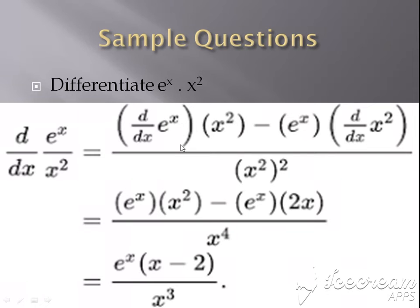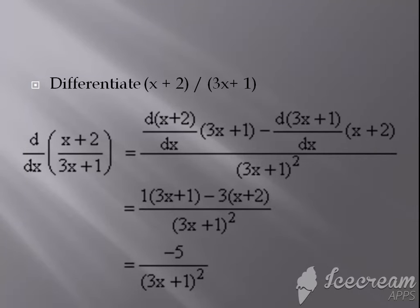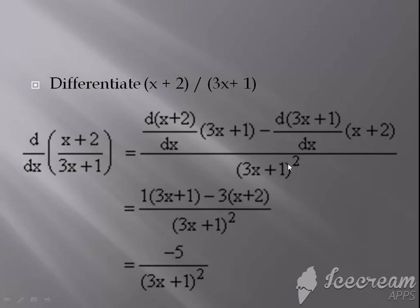Now I will give you one more sample question. Differentiate (x + 2) divided by (3x + 1). Here u is (x + 2) and v is (3x + 1). According to the formula, in the denominator (3x + 1) whole square comes. In the numerator, (3x + 1) remains unchanged times d/dx of (x + 2), minus (x + 2) unchanged times d/dx of (3x + 1).